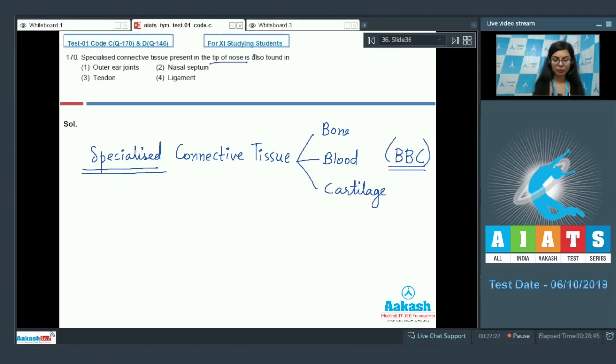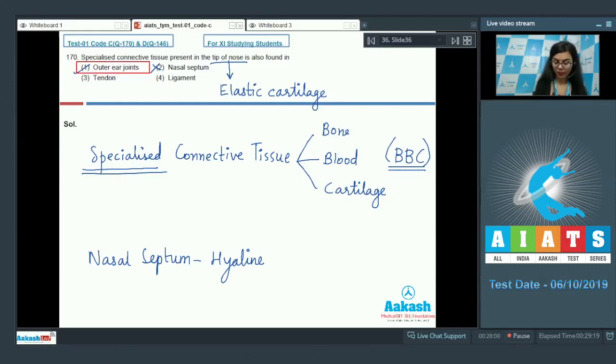And among the following options, elastic cartilage is present in outer ear joints, whereas the nasal septum has hyaline cartilage, and tendon and ligaments are dense regular connective tissue. So the correct answer here would be option one.